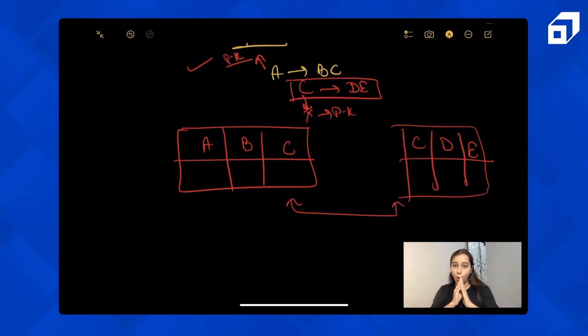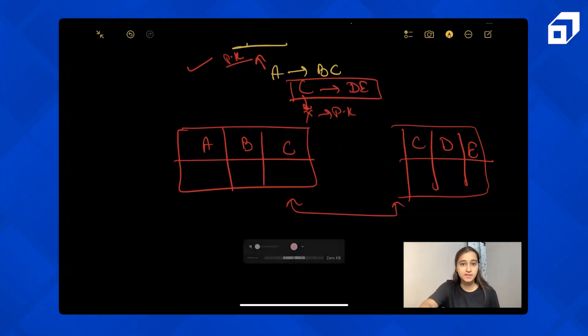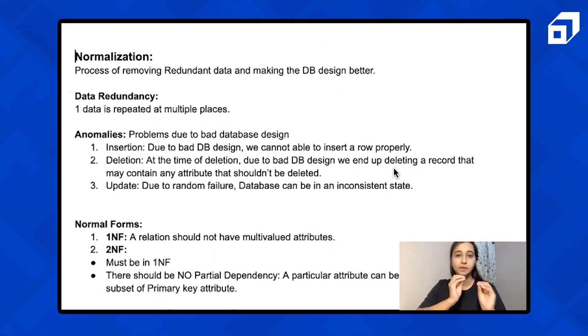So that's pretty much all we need to know about normal forms and normalization. So now let's time to revise it, revise all the concepts that we have learned. And I'll give you some examples also, some table or some functional dependencies to solve on your own. So normalization is a process of removing redundant repetitive data and making the database design better. That's the main function of normalization.